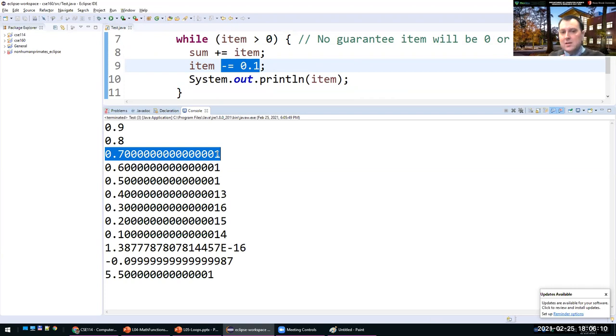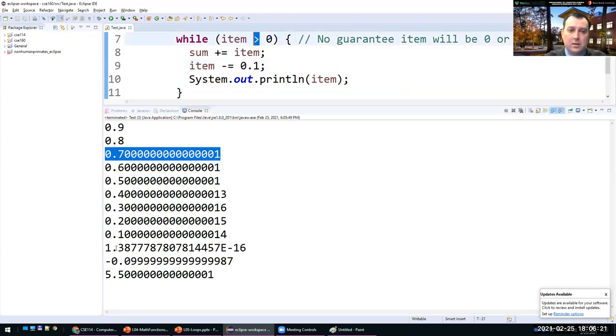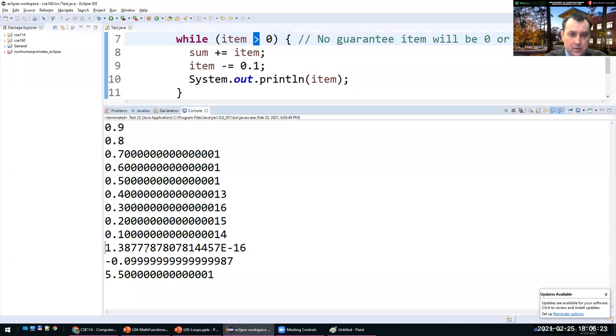It's not 0.7, it's 0.7000000 followed by eventually by one. And then the reason for that is that real numbers are not exact. There is a standard representation of real numbers, but they are not exact.